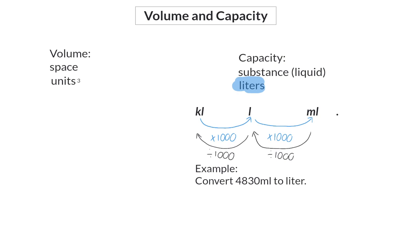Example: Convert 4,830 milliliters to liters. This means we divide by a thousand, so we move the decimal point three spaces to the left to get 4.83 liters.